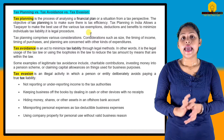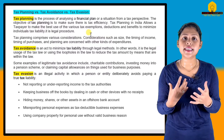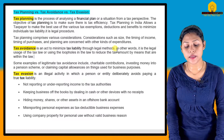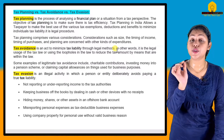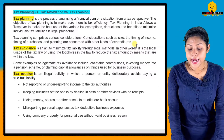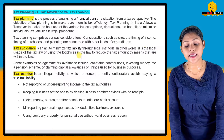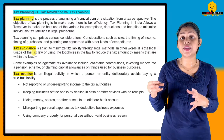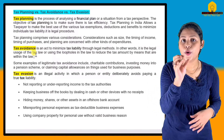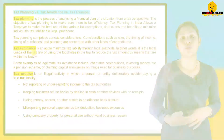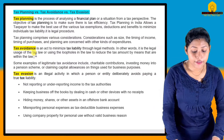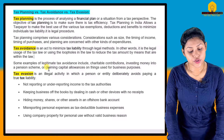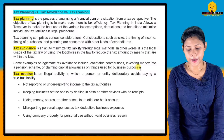Next is tax avoidance. Tax avoidance and tax planning are similar, but there is a difference. Tax avoidance is an act to minimize tax liability through legal methods. It is the legal usage of the tax law — using the loopholes in the law to reduce the tax amount by means that are within the law. Examples include charitable contributions, investing money into a pension scheme, and claiming capital allowances on things used for business purposes.